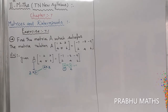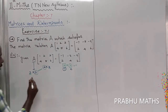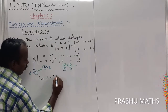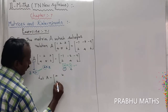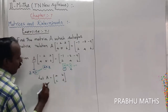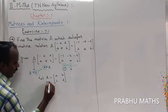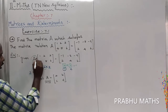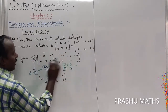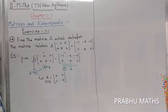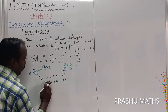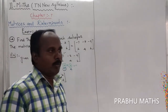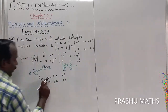Now the order of A matrix is 2 by 2. Let us consider A matrix equal to [A, B; C, D] — a 2 by 2 matrix. By comparing both sides of the equation, the order of A matrix is confirmed to be 2 by 2.